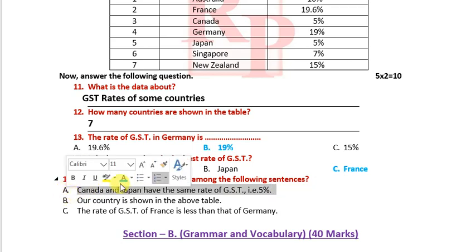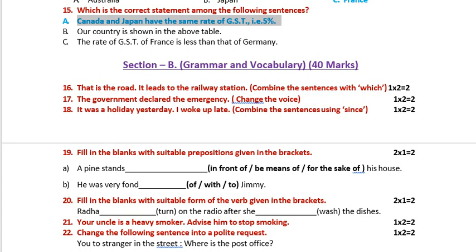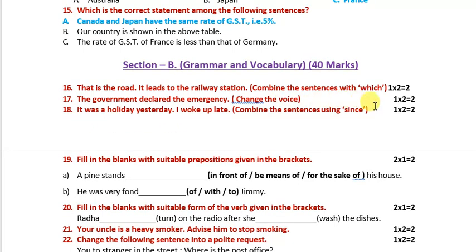Now it's time for grammar — combining sentences. 'That is the road. It leads to the railway station.' Combined: 'That is the road which leads to the railway station.'